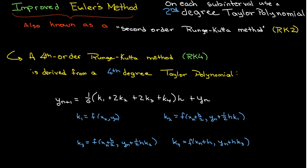So the idea is that we're using a fourth-order degree Taylor polynomial to derive values for k, which will give us a very good estimate or approximation for the slope at that value of x, x sub n.